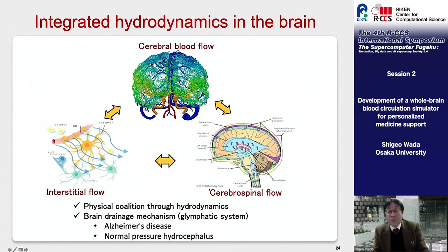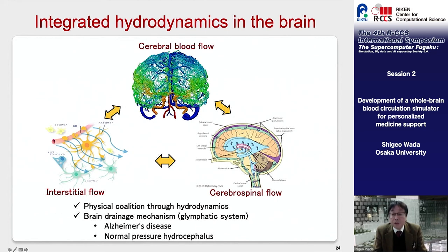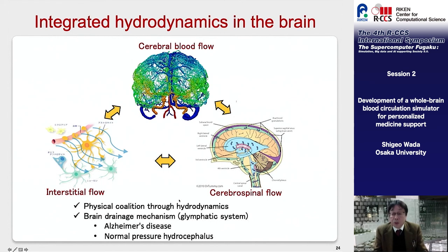I could not mention the cerebrospinal fluid flow today, but the balance of hydrodynamics in the brain is maintained by linking these three systems, and it is known that failure of this balance causes various brain dysfunctions. Currently, we are developing an integrated hydrodynamics model at the whole brain scale to clarify the physical correlations through hydrodynamics. Fugaku will play an important role in such large-scale simulation.